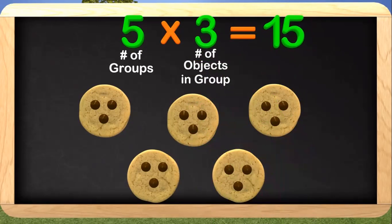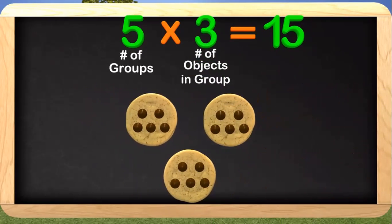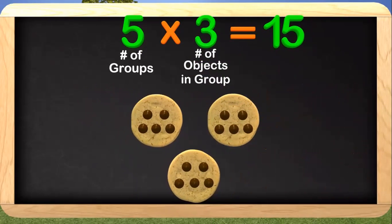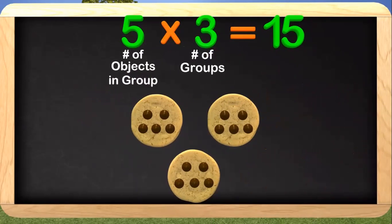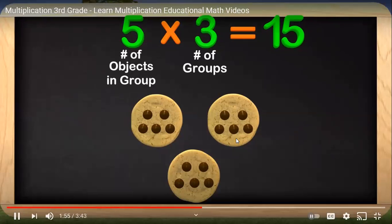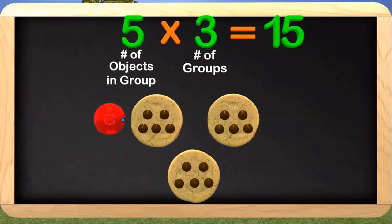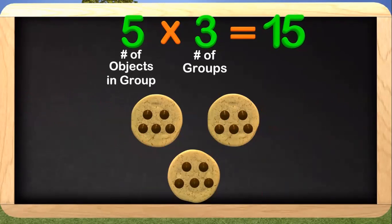We have 5 cookies, which represent the number of groups, and 3 chocolate chips on each cookie that represent the number of objects in each group. Counting all the chocolate chips gives us 15. There is something really cool about multiplication. Here we have 3 cookies, and on each cookie there are 5 chocolate chips. What we just did was switch the number of groups and number of objects — the 3 is now the number of groups, and the 5 is now the number of objects in each group. If we count the chocolate chips by skip counting by 5s: 5, 10, 15. We still get the same answer if we switch it around.